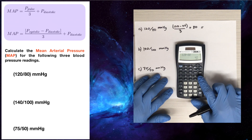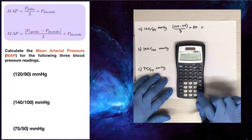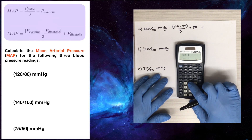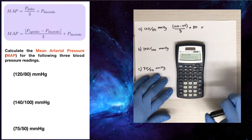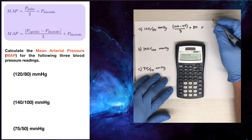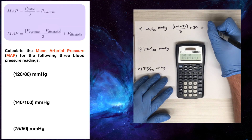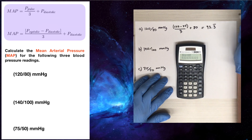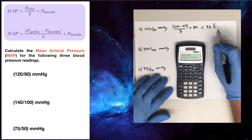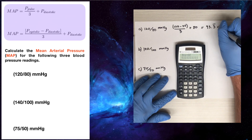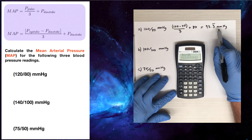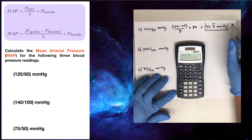So 120 minus 80 equals 40. We divide that by three and get 13.3 repeating. Adding on 80, we round this to one decimal place and approximate it as 93.3 — sometimes written with a repeating bar over the 3. That gives us a mean arterial pressure of 93.3 millimeters of mercury for our first example.